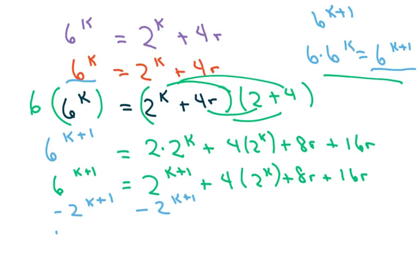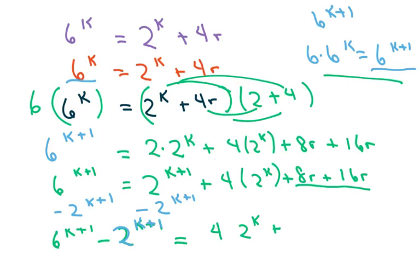What we get is 6^(k+1) minus 2^(k+1) — which is what we wanted — equals 4 times 2^k plus 24r. I can factor out a 4, and I'm going to get 4 times the quantity 2^k plus 6r.